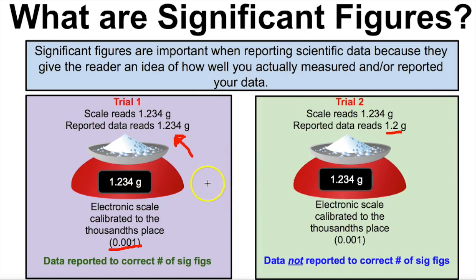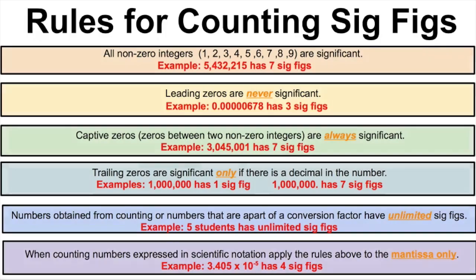Now let's take a look at the rules for counting significant figures and then apply those rules to mathematical calculations. First and foremost, all non-zero integers are significant — numbers 1 through 9 are always significant. For example, 5,432,215: all of these are non-zero integers, so this number has seven sig figs.